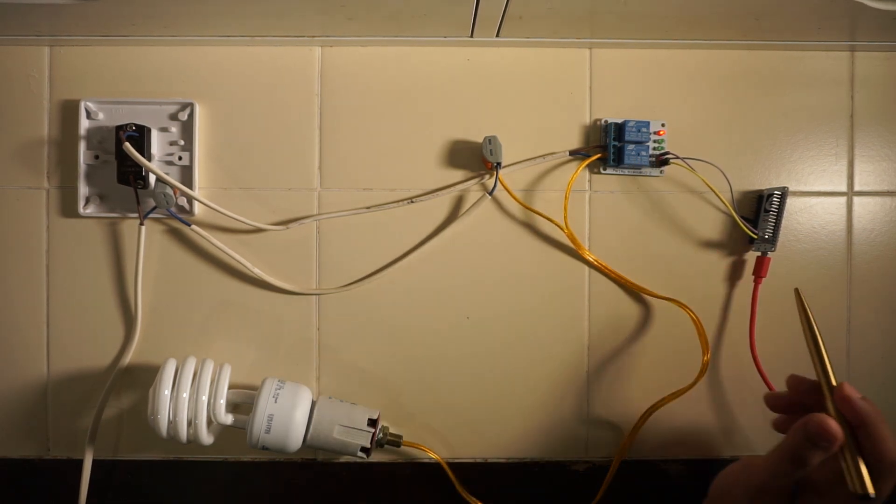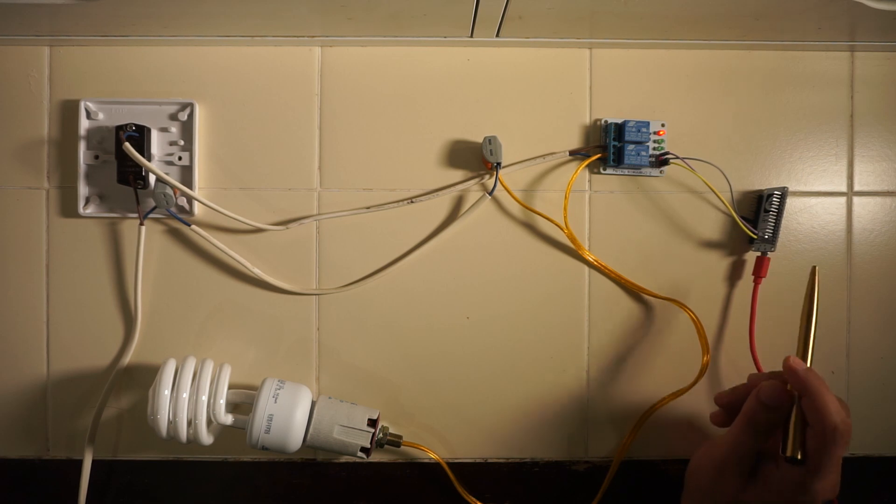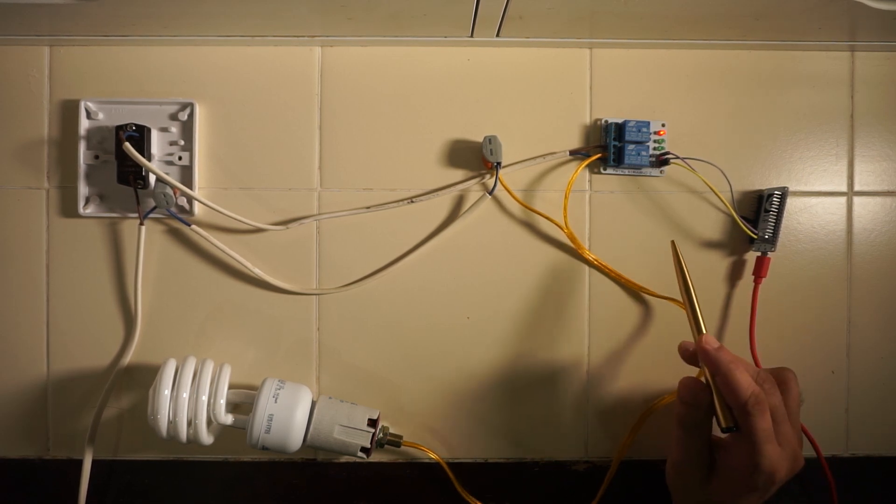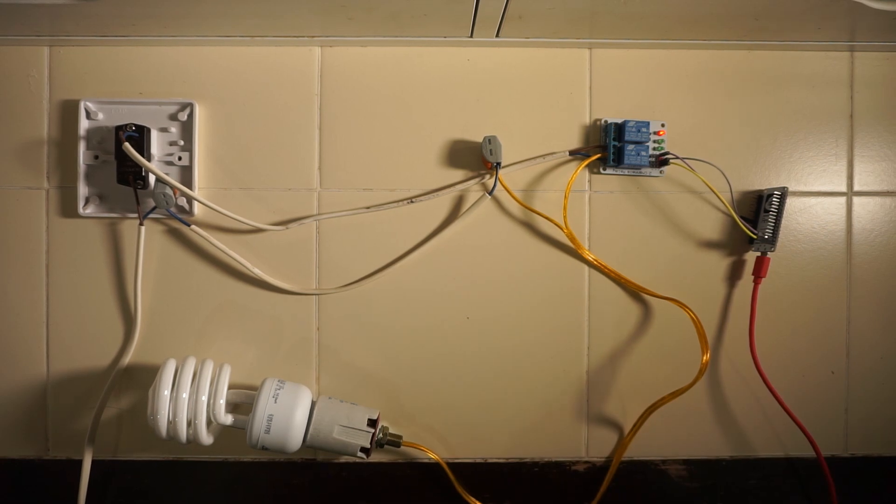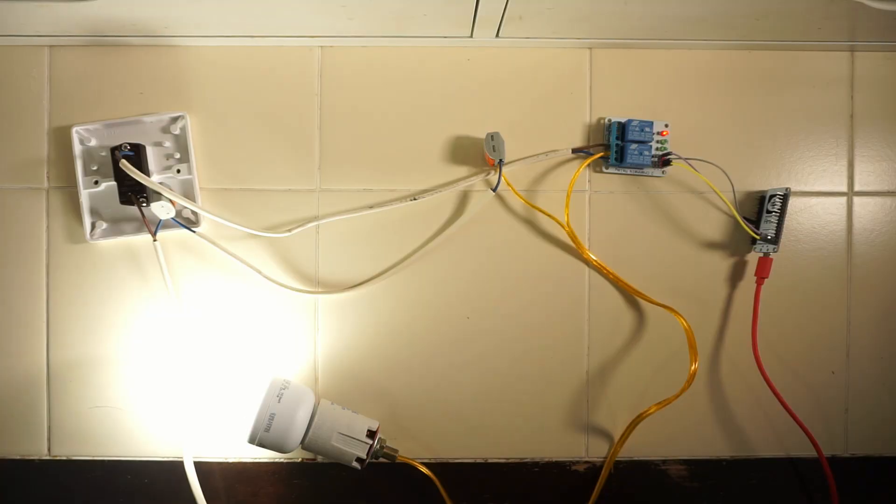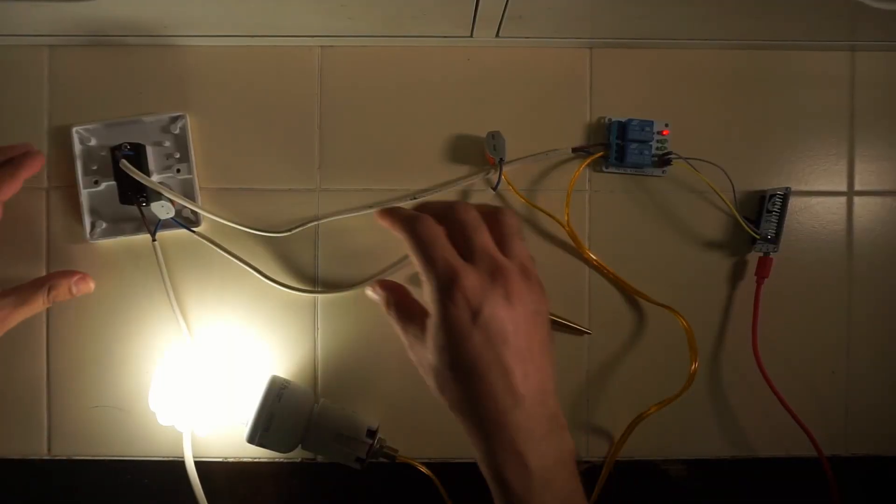The relay is connected to this ESP8266 so that we can control it with a web interface. The relay can also be integrated with OpenHAB and subsequently with Amazon Echo and Google Home. I'll power this thing now, so the bulb has already come on.